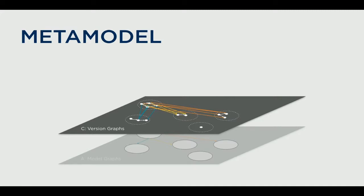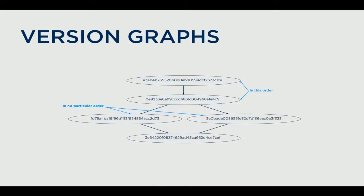All objects — both nodes and edges — are versioned over time, so you can understand not just what the world looks like today but what it looked like in the past. Every node is versioned, and every edge is also versioned, which allows you to capture relations between different versions of data and relationships across time. Our versioning model is a directed acyclic graph, or DAG model, which allows you to represent commits that came in order as well as commits that came in no particular order.